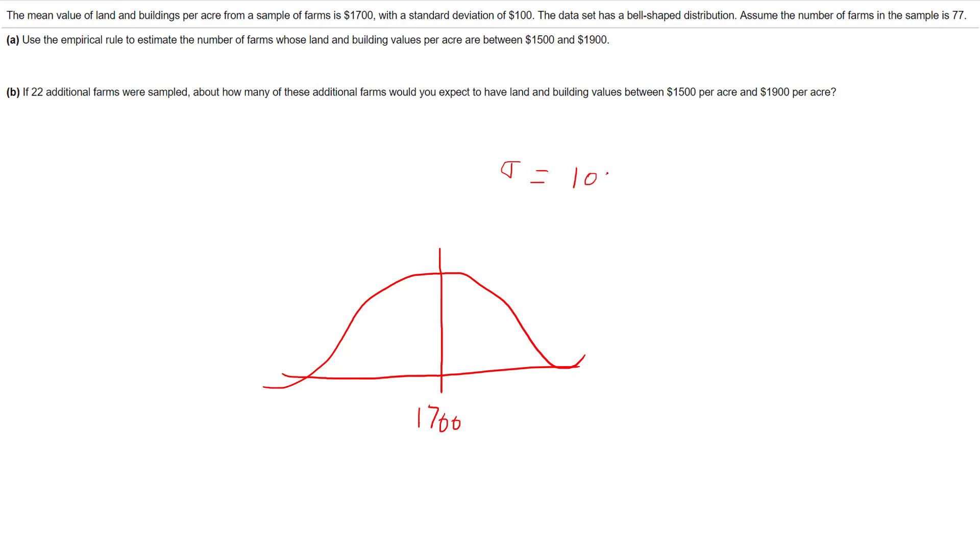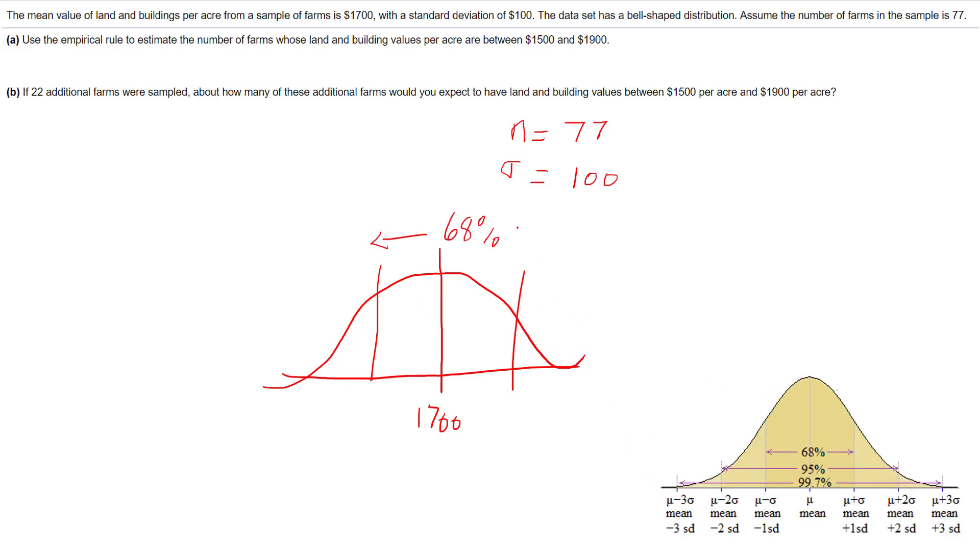It says the sample size is 77. I'll use the empirical rule. What is the empirical rule? Remember, the empirical rule says 68% of your data is within one standard deviation of the mean. So below, if the standard deviation is $100, that would be $1,600, and then if I add $100, that would be $1,800.